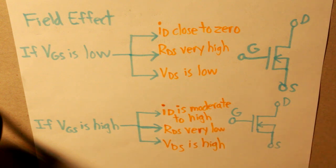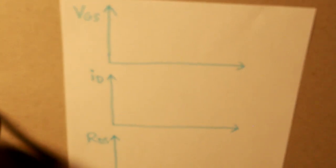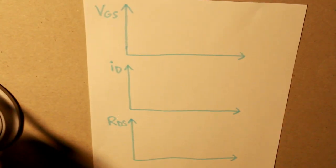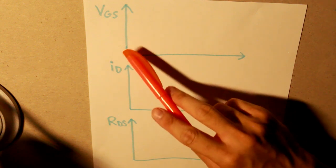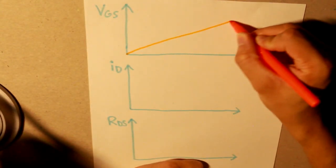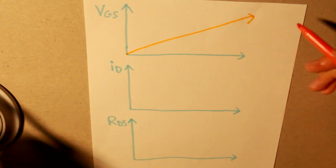So, this is our field effect condition on what would basically happen. Now, let's look at a graphical standpoint. So, let me zoom out a little bit. So, let's say that VGS, we have this graph, and over time, VGS will be basically increasing. And it increases linearly.